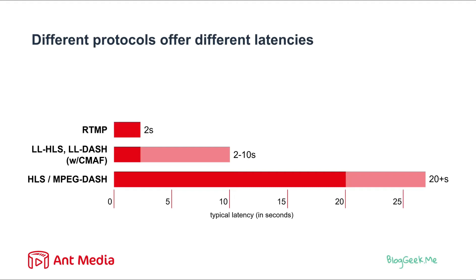RTMP, an older protocol, can get us to around two seconds of latency, sometimes a bit less than that. And then there is SRT, usually handled across browsers and not to end users — though it can be used there as well — also at around two seconds. And then there is WebRTC, which is a sub-second protocol, meaning that in most cases and for almost all use cases, WebRTC will get us to below one second of latency.